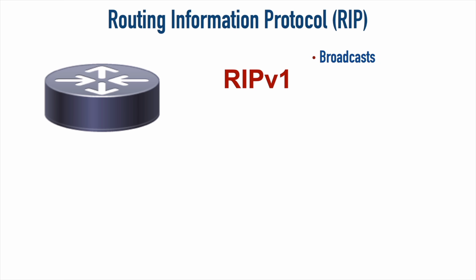A broadcast goes to every device within a subnet or broadcast domain, meaning when a router advertises its routing table, that advertisement goes not just to neighboring routers but to PCs, printers, and every other device in that subnet. To compound that, it happens by default every 30 seconds — it's like someone reading you their resume, then coming back 30 seconds later and doing it again, over and over.